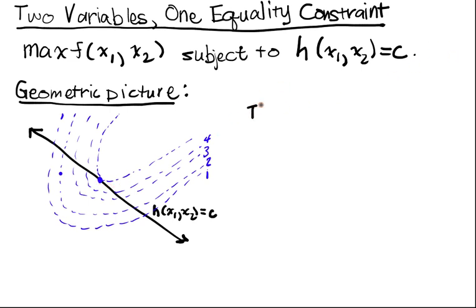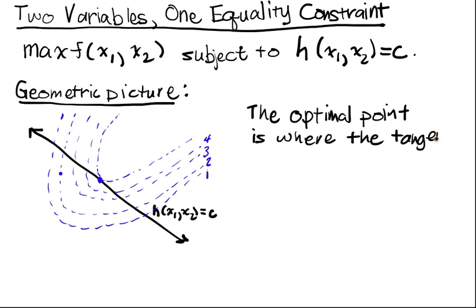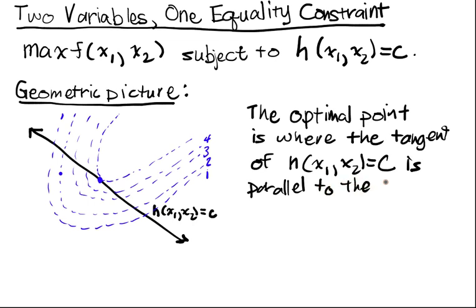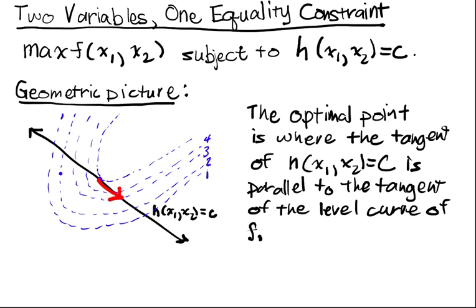And so what does kissing mean? This means that the optimal point is where the tangent of h(x1, x2) equals c is parallel to the tangent of the level curve of f. That is, the tangent direction here should match up with the tangent direction of this level curve at that point, so they should live along the same line.